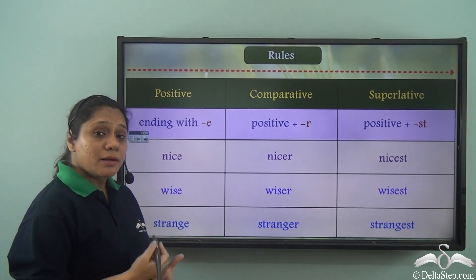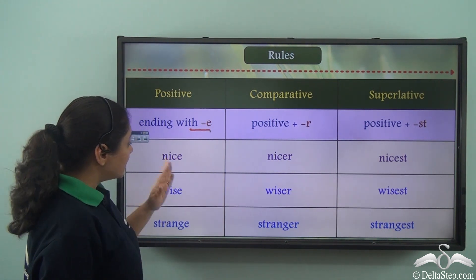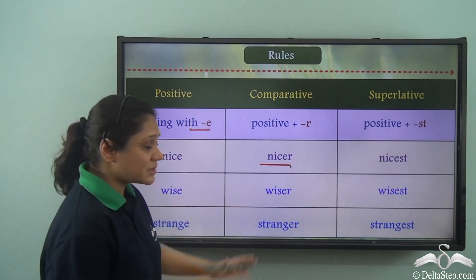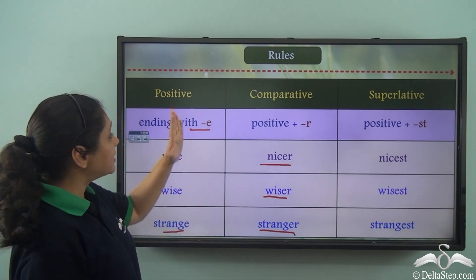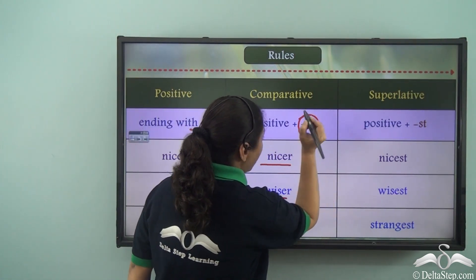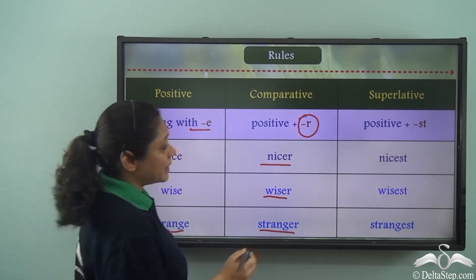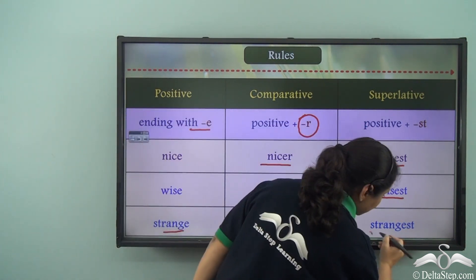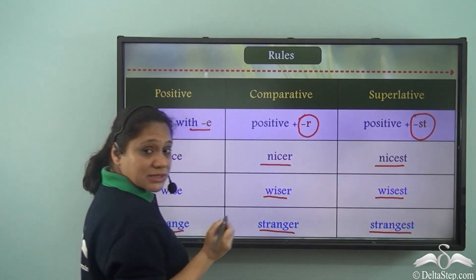If the simple form of the adjective ends with an 'e,' then in the comparative degree we just add an 'r' to the positive form. So 'nice' becomes 'nicer,' 'wise' becomes 'wiser,' and 'strange' becomes 'stranger.' To get the superlative degree, we add 'st' to the positive degree — so 'nice' becomes 'nicest,' 'wise' becomes 'wisest,' and 'strange' becomes 'strangest.'